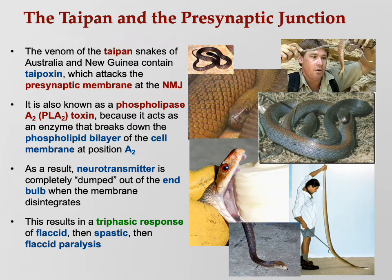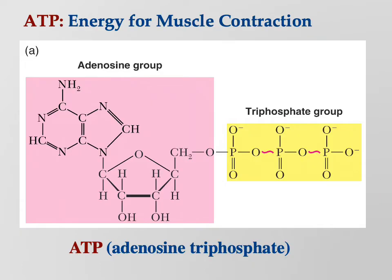So if you're ever bitten by a taipan, you'll know exactly what's happening: first losing muscle control as the phospholipid bilayers are eaten away, then going spastic as all neurotransmitters dump into the synapse, then going flaccid again as acetylcholinesterase gobbles up all that acetylcholine. You'll know exactly what's happening as you die.